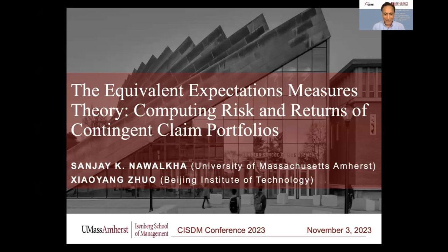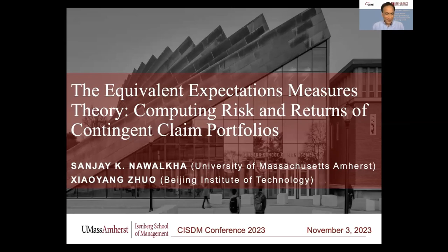We are so happy to celebrate the 50th anniversary. It just happens to be so that the research I'm doing is connected to the Black-Merton-Scholes model, so it was the right occasion. The title is Equivalent Expectation Measures Theory. This was a paper that came out in the Journal of Finance in 2022. In the paper, we computed expected returns of options and really all contingent claims, including treasury bonds and corporate bonds. Today I'll also cover risk measures: variance, skewness, kurtosis, and some of those moments.